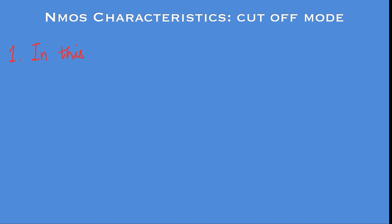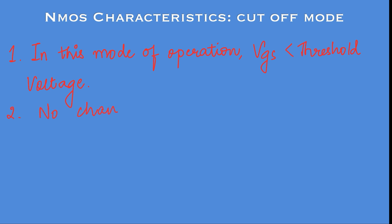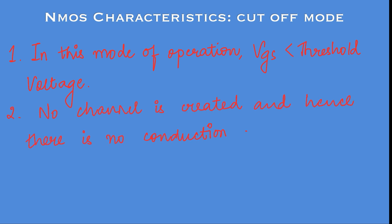The first is the cut-off mode. In this mode, the voltage VGS is less than the threshold voltage. There is no channel created and hence there is no conduction of current. Thus, the drain current ID is equal to 0 in the case of the cut-off mode.